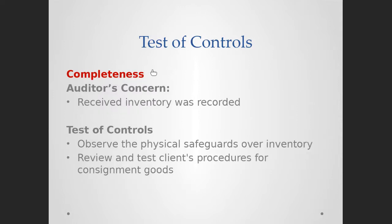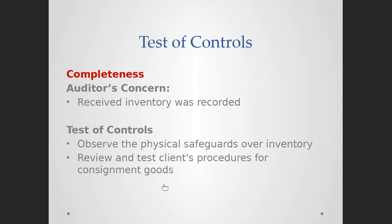The next management assertion is completeness — everything that happened is recorded. We want to make sure the inventory that was received was recorded properly. To test this, we observe the physical safeguards over the inventory to make sure inventory is physically guarded. We also review and test the client's procedures for consignment goods.